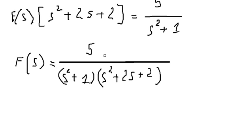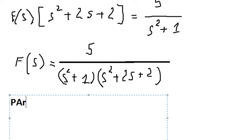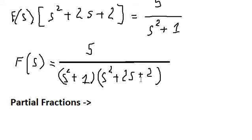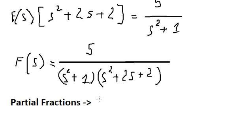Now we need to use partial fractions. We have s-squared plus one, so we can write capital A times s plus B over s-squared plus one.